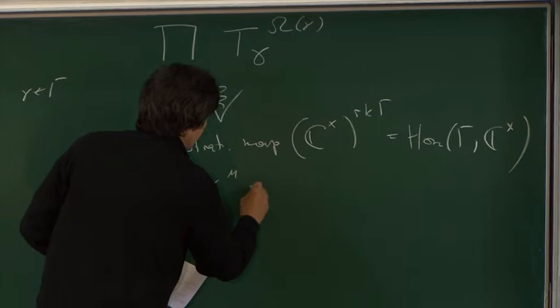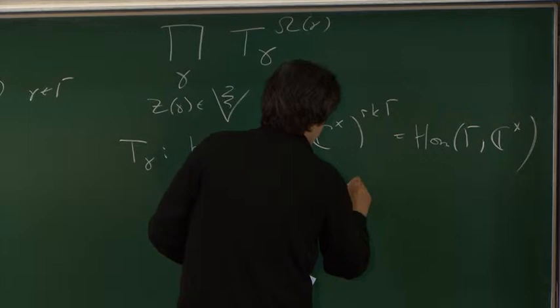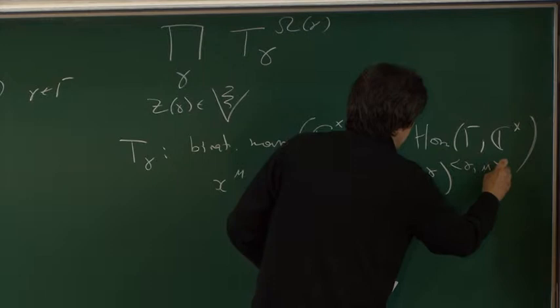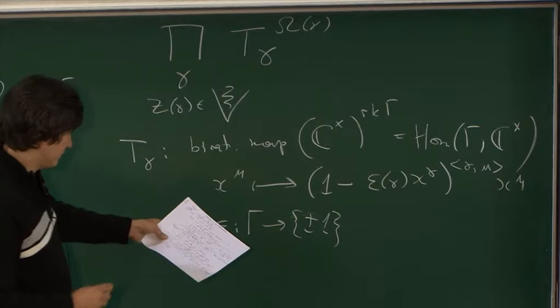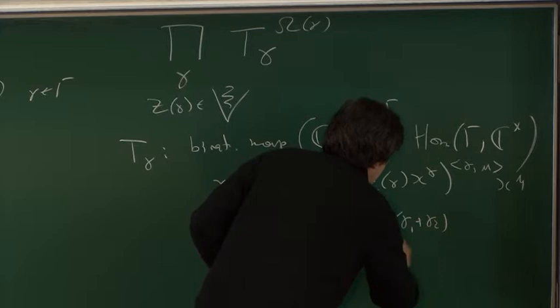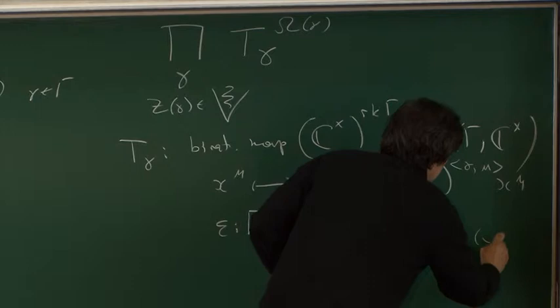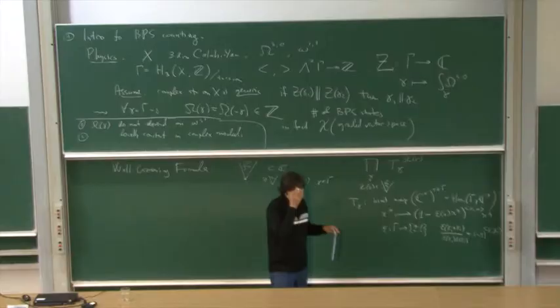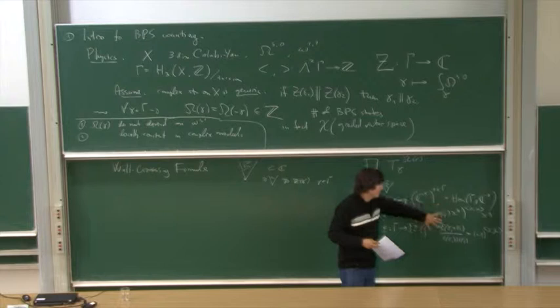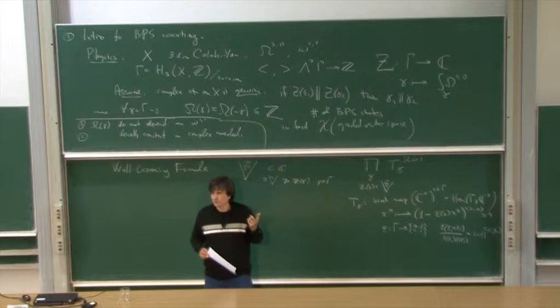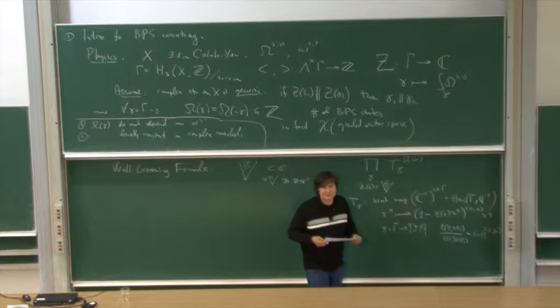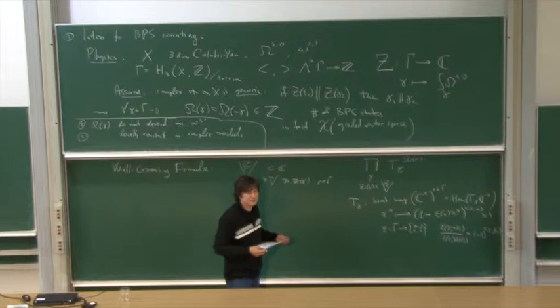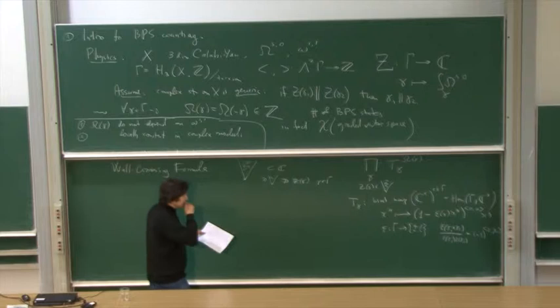The transformations are the following. It's a birational map of a torus, homomorphism from gamma to C star. Here we have a formula which maps x mu to one minus some sign, where epsilon is a quadratic form with values in plus minus one. There's some invariant way to say it, but I have a question to the audience, maybe to physicists: is the choice of epsilon a choice of structure, or does physics predict there will be some specific epsilon? I don't know.